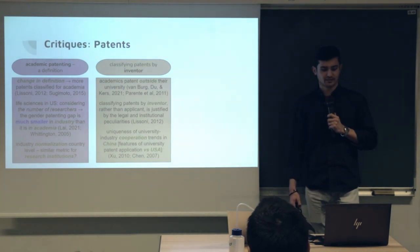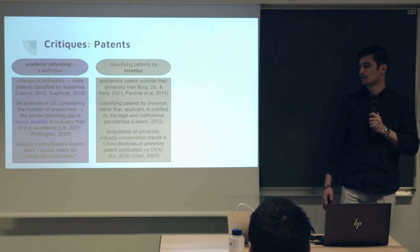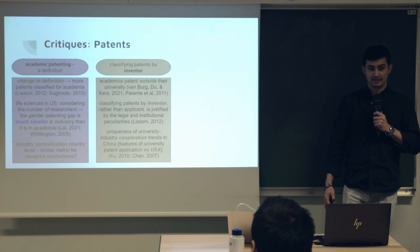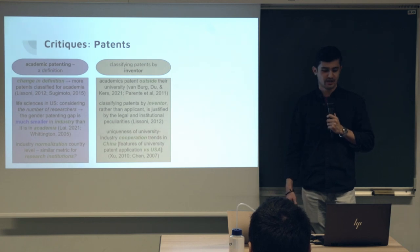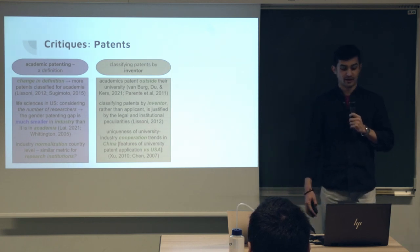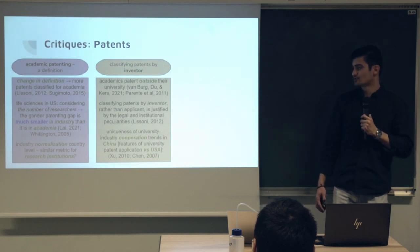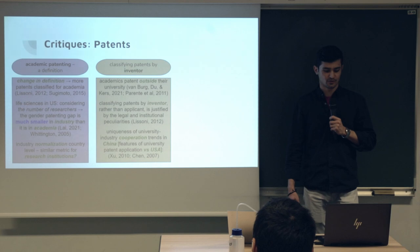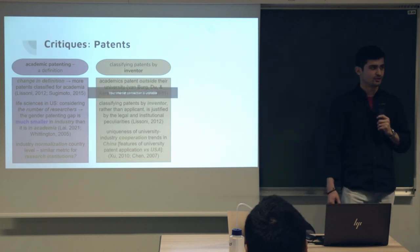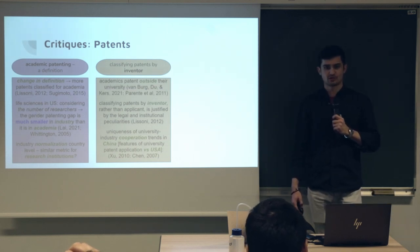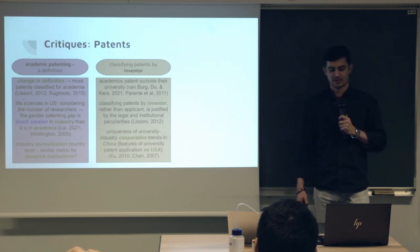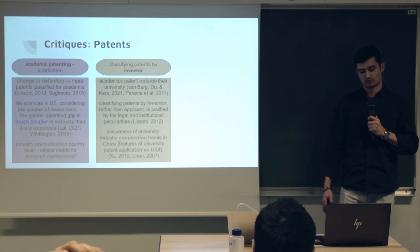Classification of patents by inventor method is computationally heavy and requires a lot of scrutiny over analyzing all inventors and finding their affiliations. But it can be done, since academics usually patent outside their universities, and classifying patents by inventors rather than applicants is justified by legal and institutional peculiarities. For example, there are papers showing the uniqueness of university–industry cooperation in China compared to the US — China shows much higher patenting by industries and co-patenting that does not quite compare to the US.